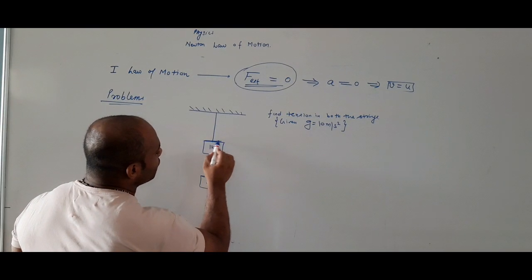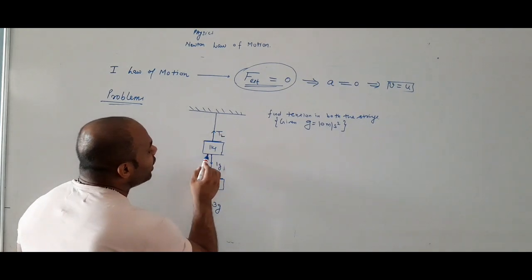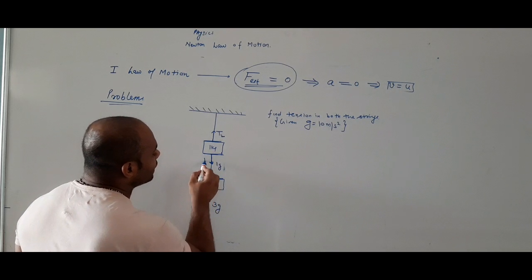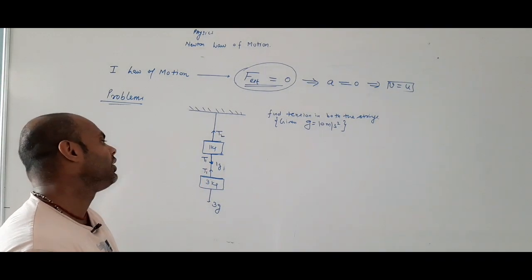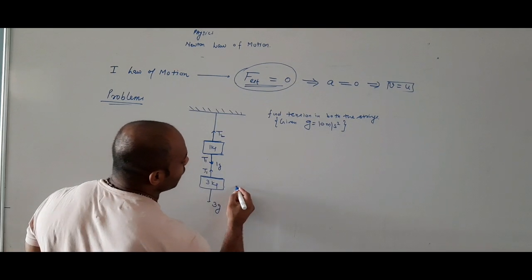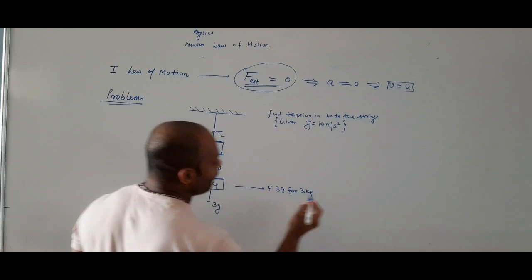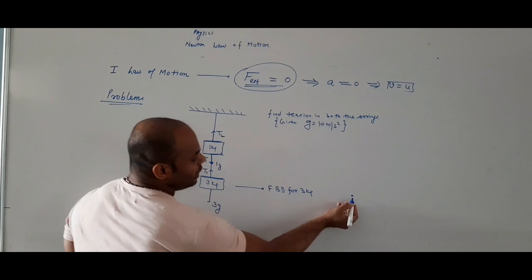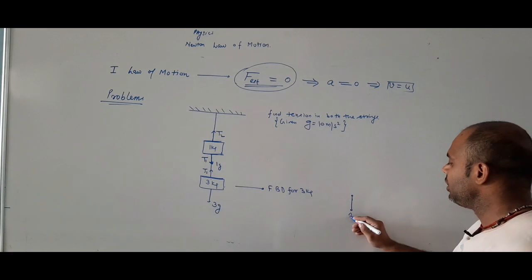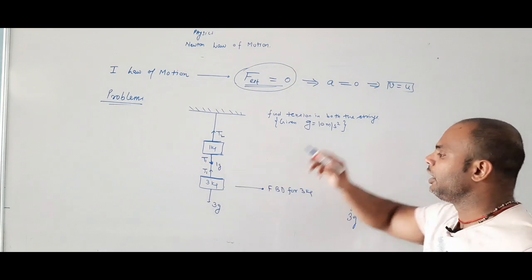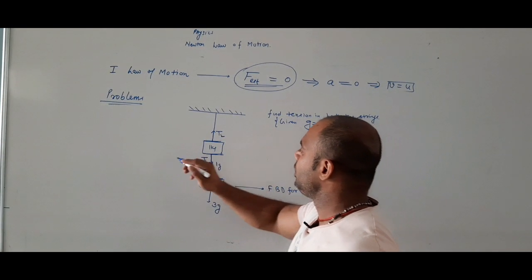Tension nikalne ke liye sabse pehle FBDs banani padegi. Is body ka mass 3g neeche lagega. G is given as 10 m/s². The 1 kg block will also have a weight of 1g downward. The string surface exerts tension T1 upward on the 3 kg block, and tension T2 on the 1 kg block — because these are different strings.